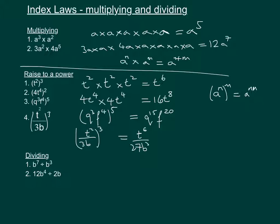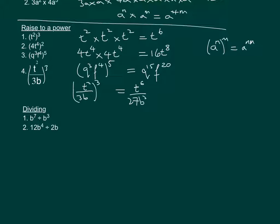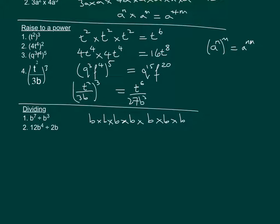Finally, if we look at dividing: we have b to the power of 7, divided by b to the power of 3. Writing it as a fraction — b to the power of 7 over b to the power of 3 — we can cancel the b's. We're left with 4 b's all multiplying each other, which is b to the power of 4.